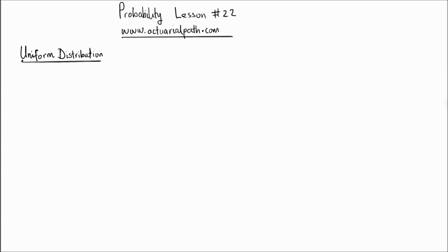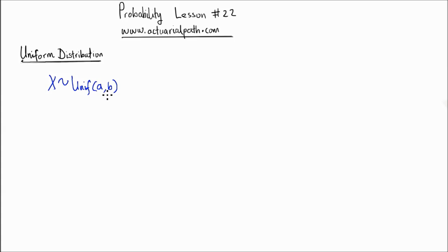Hi everyone, this is lesson number 22 from Actuarial Path on Probability, and in this lesson we study the uniform distribution. If we have a random variable x that follows a uniform distribution with parameters a and b, here a and b are the lower and upper limits of the values that x can take. A uniform random variable is equally likely to take any value between its lower limit and its upper limit.